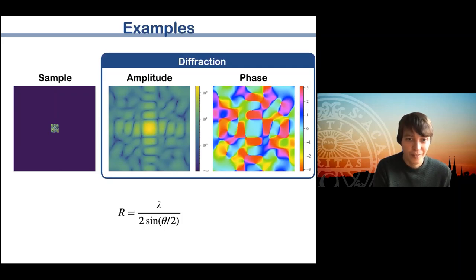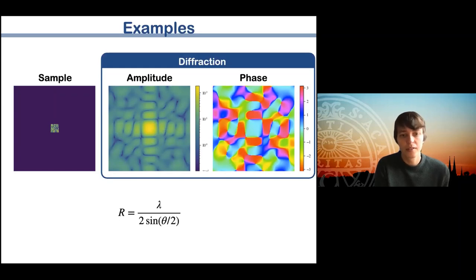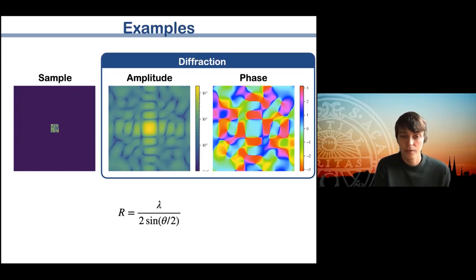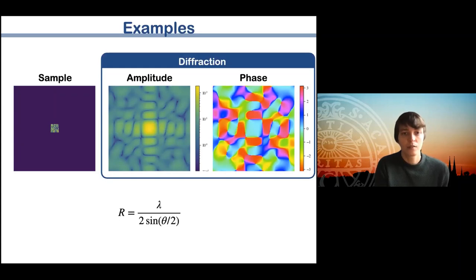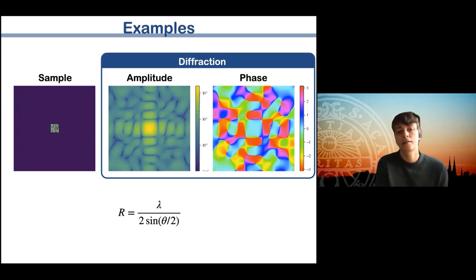To put this into formulas, the resolution coded by a particular location in Fourier space is given by the formula d = λ / (2 sin θ), where λ is the wavelength and θ is the scattering angle. A low scattering angle puts you close to the center of the detector — corresponding to low resolution — while a high scattering angle puts you near the outside of the detector, far out in Fourier space, corresponding to high resolution.